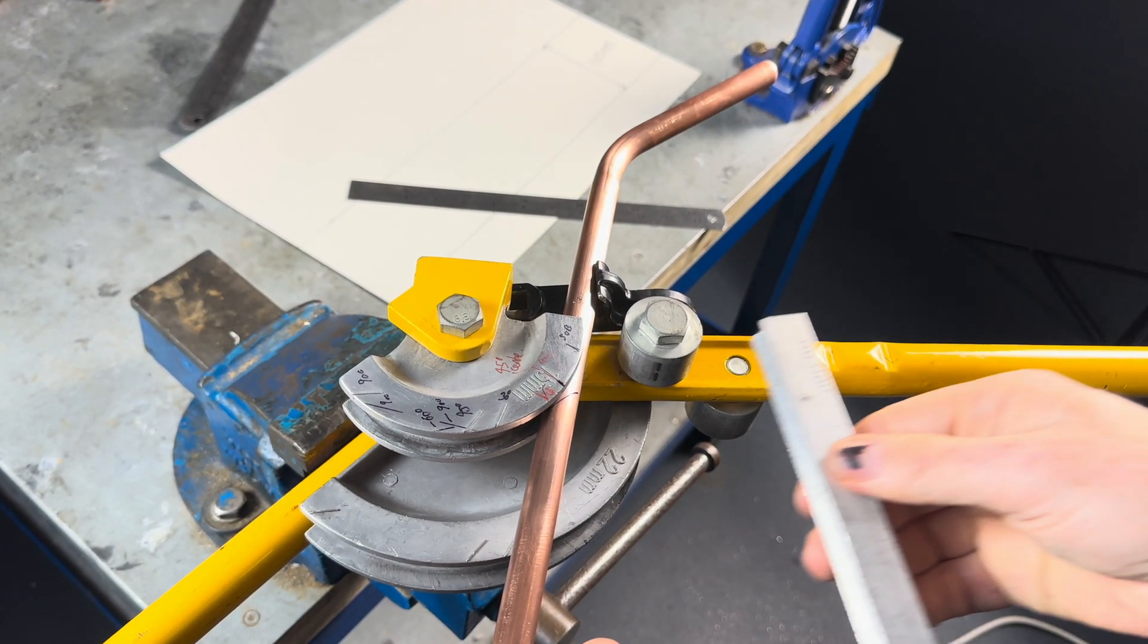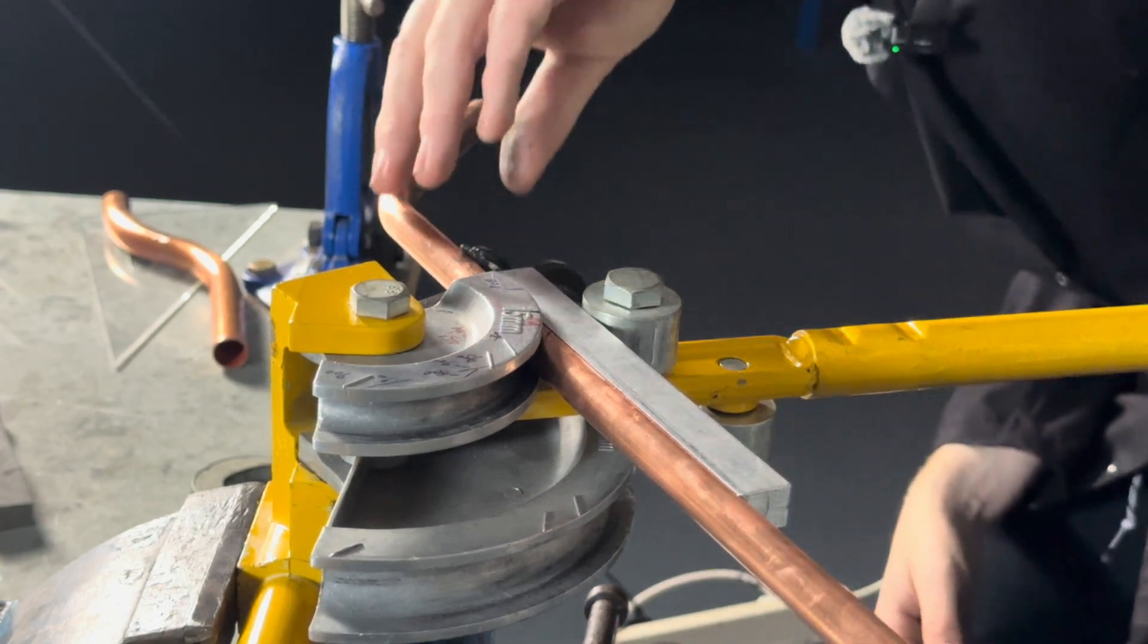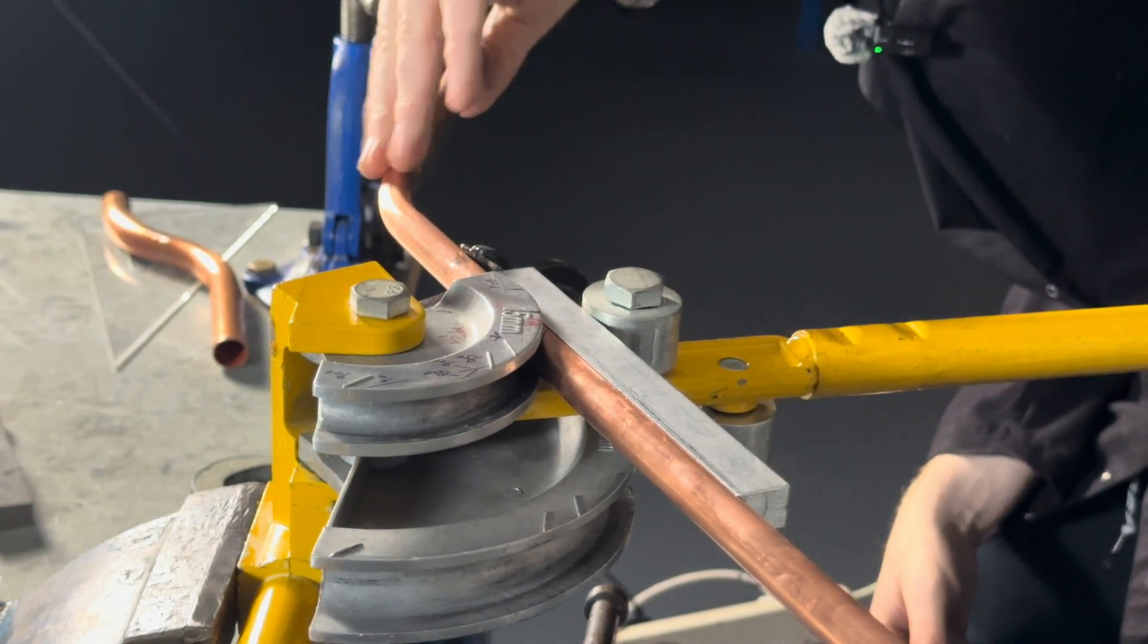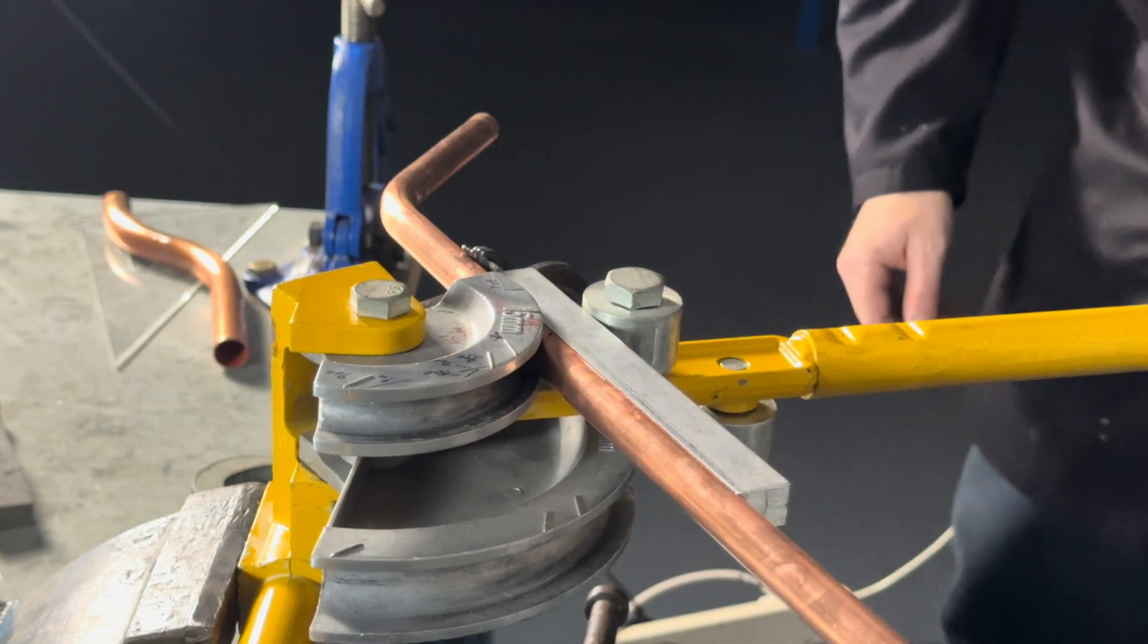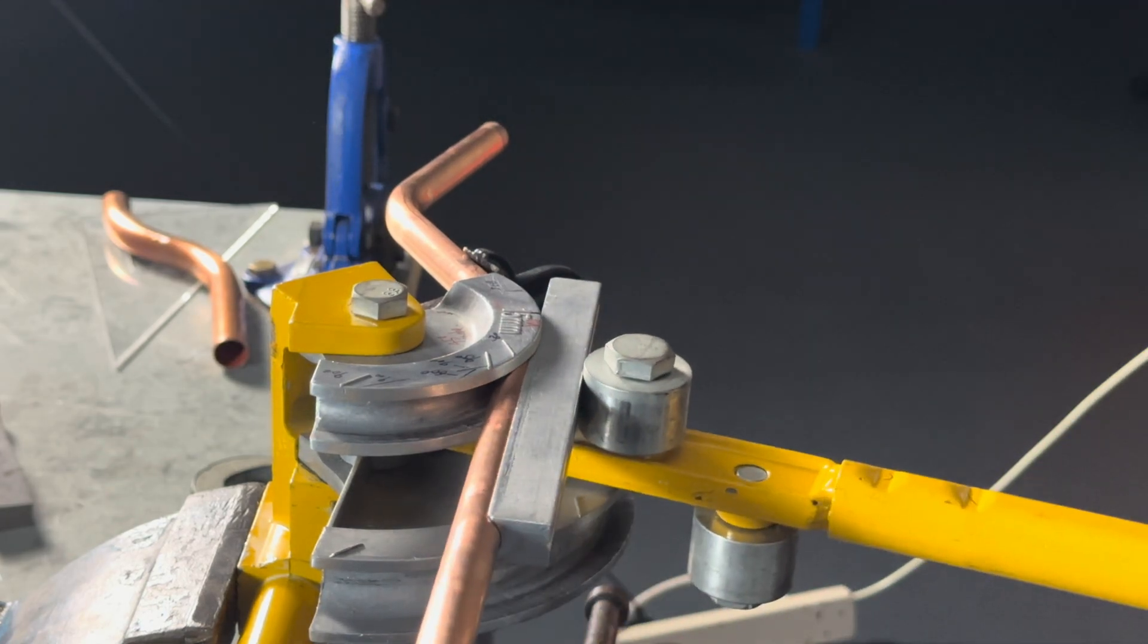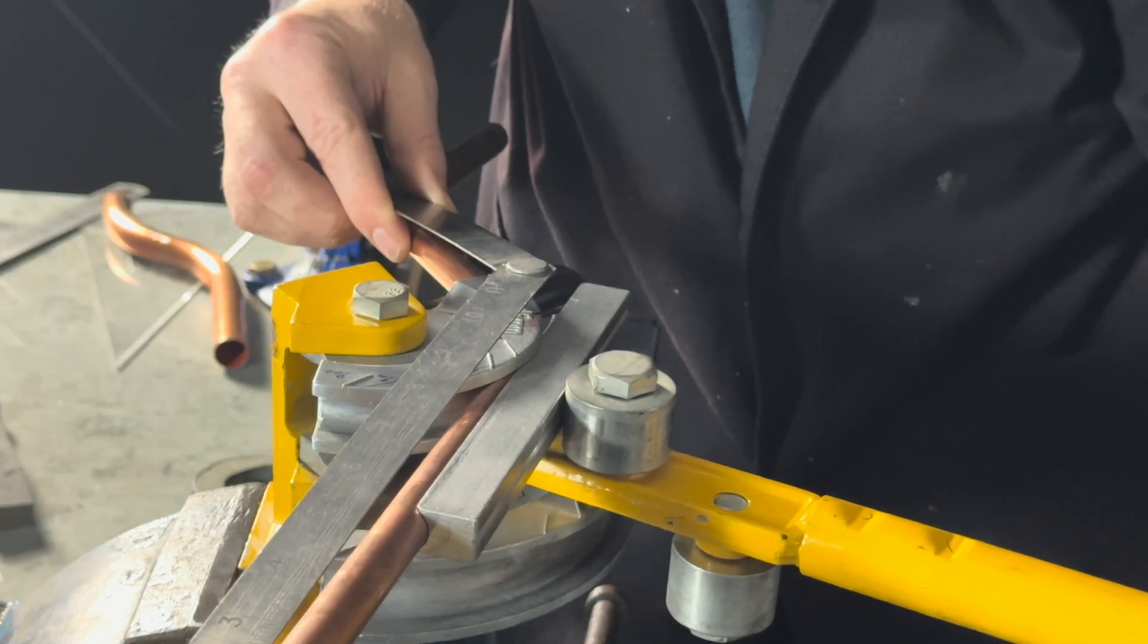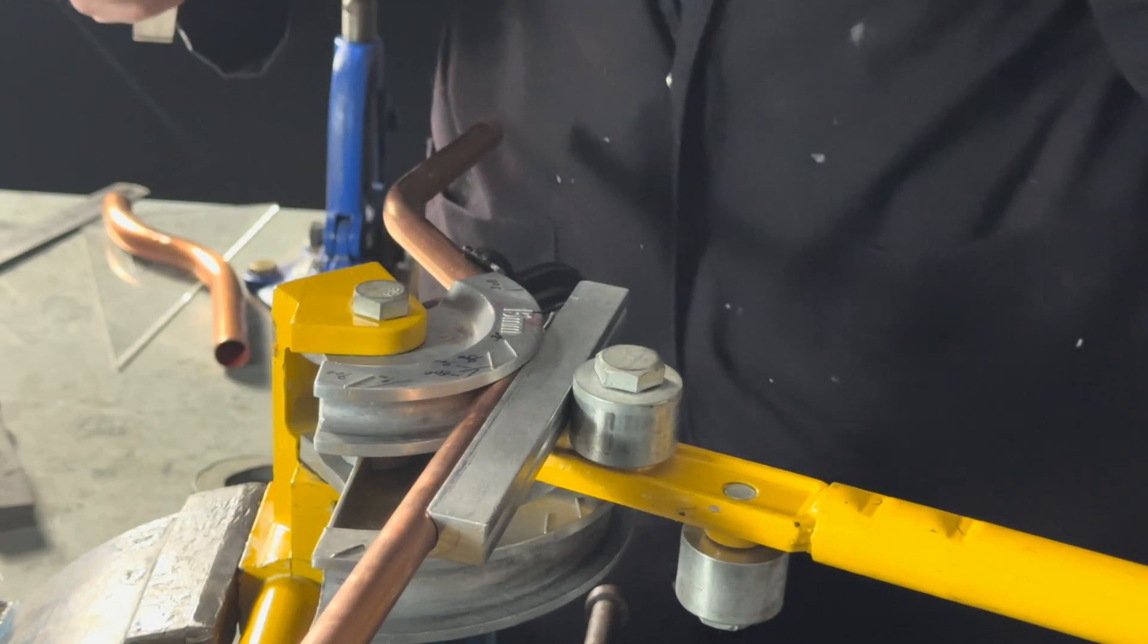So we'll then put the guide in. Make sure the pipe's nice and straight. So for example, that's not straight. It's nice and straight. And we then bend this back 45 degrees. So we bend it back. Take the pressure off. So about there.